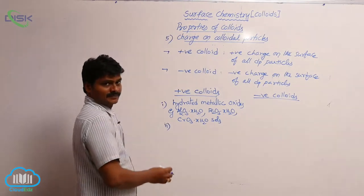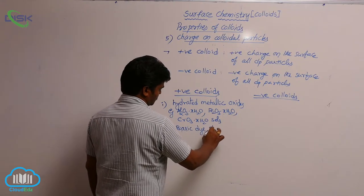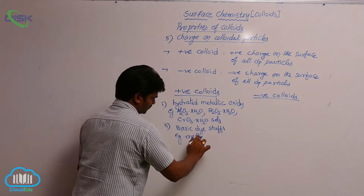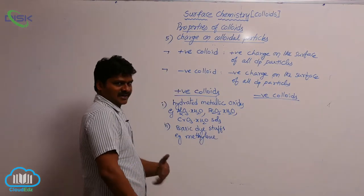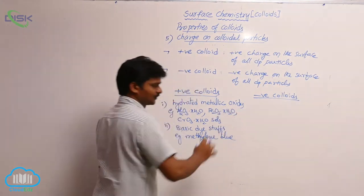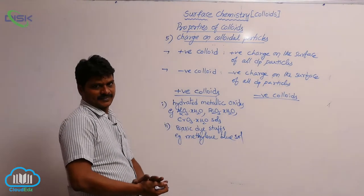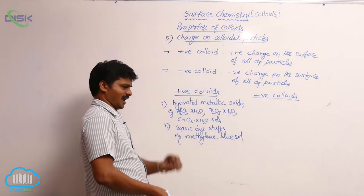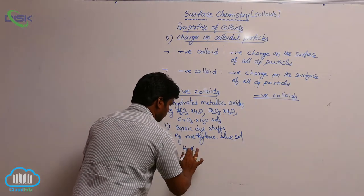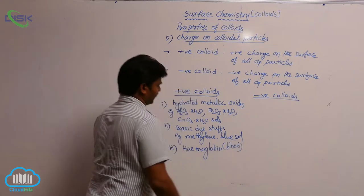The second example of positive colloids is basic dyes. An example is methylene blue — methylene blue is an indicator used in acid-base titrations like methyl orange. When methylene blue salt is added to water it forms a colloidal solution which is a positive colloid. Third, hemoglobin — that means blood — is also an example of a positive colloid.